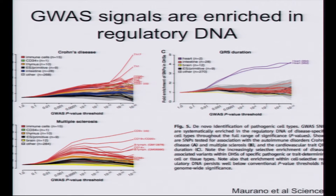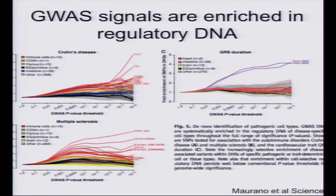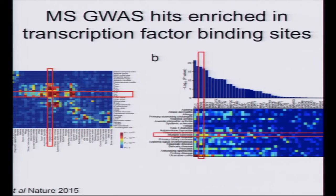Ten years ago people said GWAS wasn't going to work; five years ago everything was about coding variants. Now everything's regulatory — it seems obvious, but even two or three years ago it wasn't. This chases us down the rabbit hole of which genes are getting dysregulated and how that causes disease. Further evidence from Kyle Farh and Brad Bernstein shows MS SNPs are particularly enriched for NF-κB transcription factor ChIP-seq peaks. There's fairly specific dysregulation in immune cells, which is great in bulk but hard when you want to identify specific effects on specific genes in specific cells.